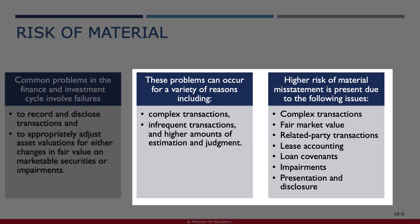For example, related party transactions may not be conducted at arm's length, meaning the terms may not be as favorable or economically rational as those between unrelated parties. This lack of independence can lead to misstatements in the valuation or terms of the transaction. Overall, given these complexities, auditors need to exercise a higher degree of professional skepticism and apply robust audit procedures to address the increased risk of misstatement. Thorough risk assessments, testing of internal controls, and detailed substantive procedures are essential to ensure the accuracy and reliability of financial statements in this cycle.